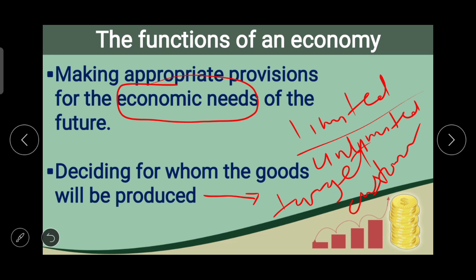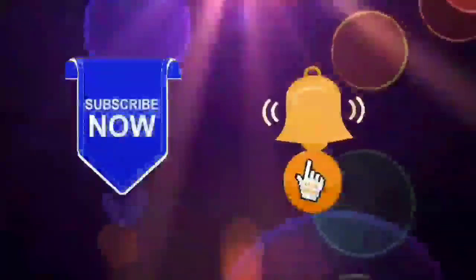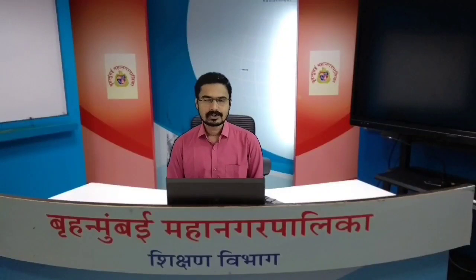In today's topic we discussed the concept of economics and how it is directly related to family management. We covered the types of economy — capitalistic, socialistic, and mixed — then Adam Smith, the father of economics, and his book 'Wealth of Nations' where he defined economics as the science of wealth. We also discussed the concept of globalization and the functions of an economy. Please subscribe to the channel and press the bell icon. Thank you very much — stay home, stay safe, take care.